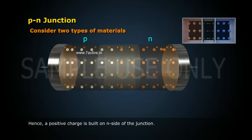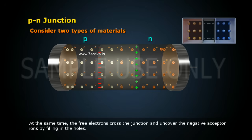Hence, a positive charge is built on the N-side of the junction. At the same time, the free electrons cross the junction and uncover the negative acceptor ions by filling in the holes.